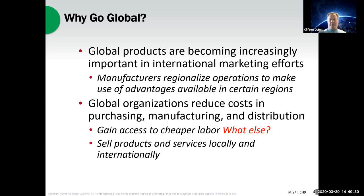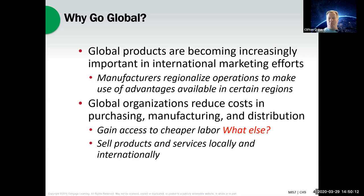So why go global? Global products are becoming increasingly important all around the world. Some of the videos you can watch for this chapter show how a car gets put together — it may be assembled in Mexico, with metal coming from Brazil, and transmissions from Sweden. Global sourcing makes a lot of products. When it comes to reducing costs in purchasing, manufacturing, distribution, and warehousing, companies want to get parts just in time. And most of us are aware of much cheaper labor in many countries — that's why things are assembled in Mexico.